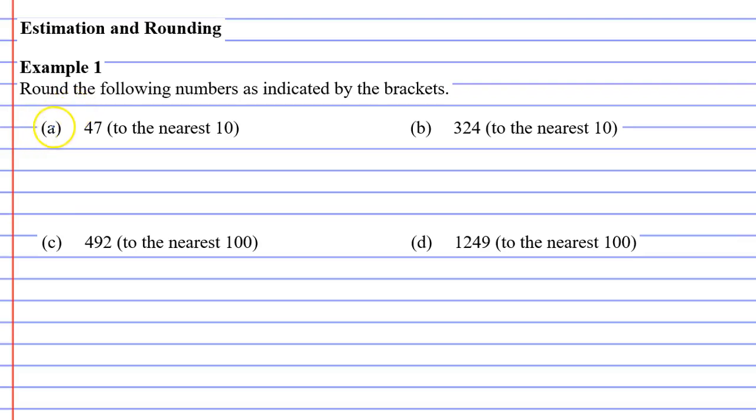Let's look at question A where it wants us to round 47 to the nearest 10. You'll notice that 10 has one zero in it, so we want to round such that our number has one zero at the end.